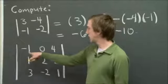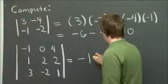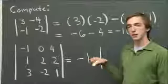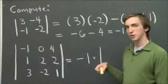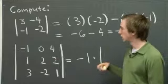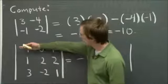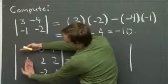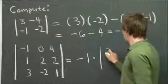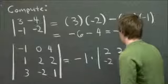So what that means is we take the very first entry, minus 1. And now we need to multiply by a 2 by 2 determinant, which we get by covering up the row and the column corresponding to our first entry. So our first entry was minus 1. And what we need to do is cover up the row and column containing that. And we have this little 2 by 2 matrix here. And so we get 2, 2, minus 2, 1.